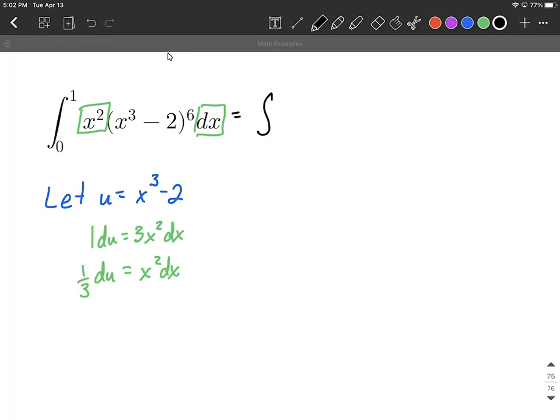So we have the integral. Instead of x cubed minus two raised to the sixth power, that's where we put our u. So we have u to the sixth power on the inside. And then the one-third du is going to replace the x squared and the dx. I can put the one-third out in front and the du at the end.